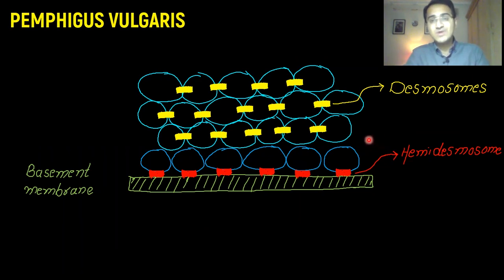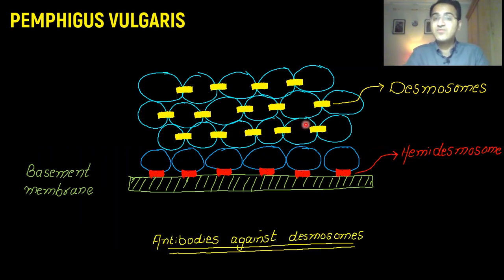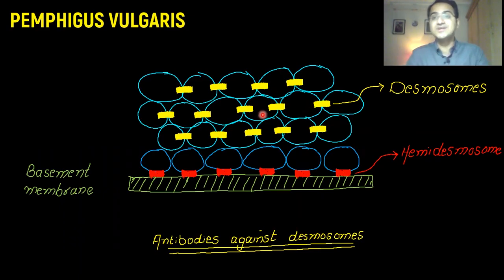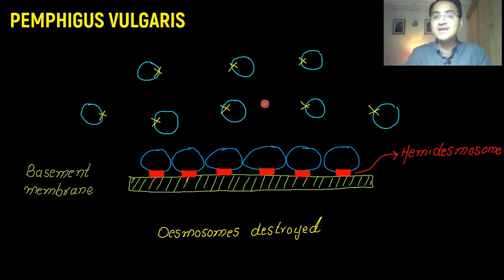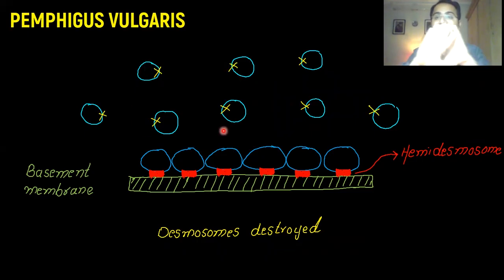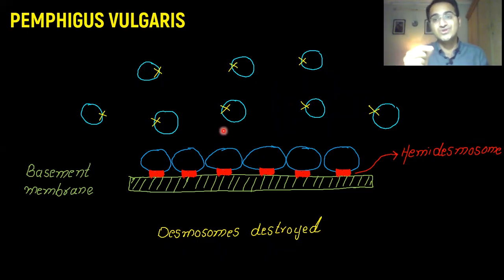What happens in Pemphigus vulgaris is that antibodies are formed against these desmosomes — against the glue that holds these cells together. When there is no desmosome present between the cells, the cells are scattered around and they appear like this. When the desmosome is destroyed, these cells scatter around, and that results in the formation of blisters that you see in a patient.